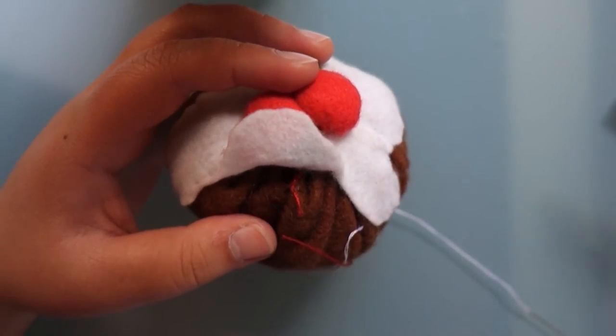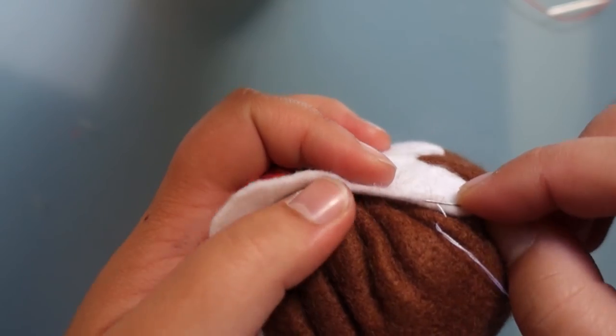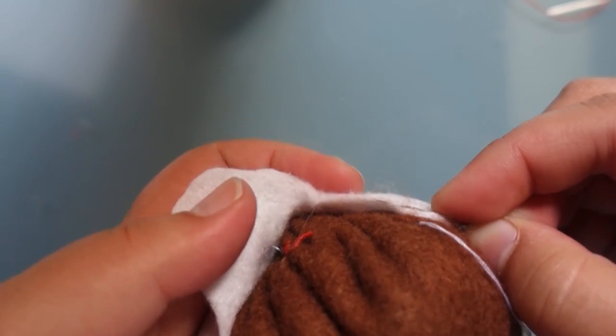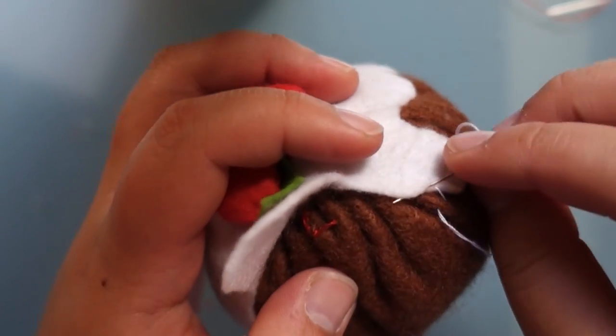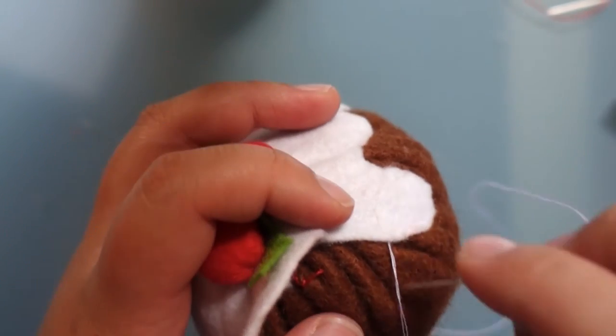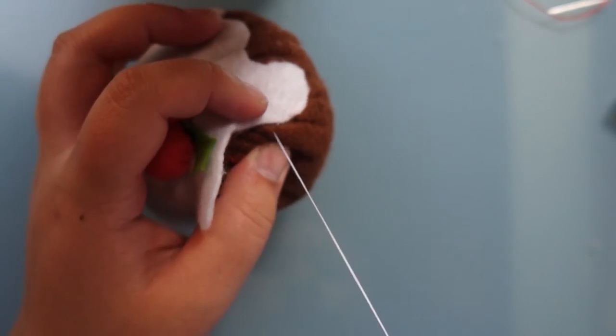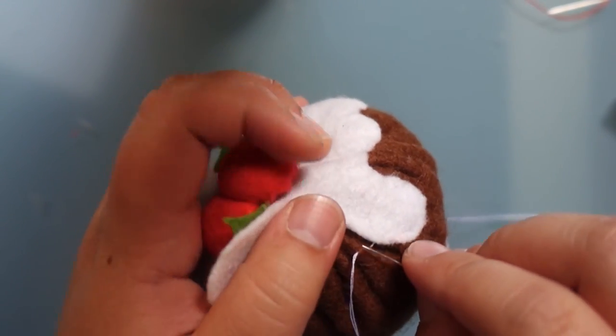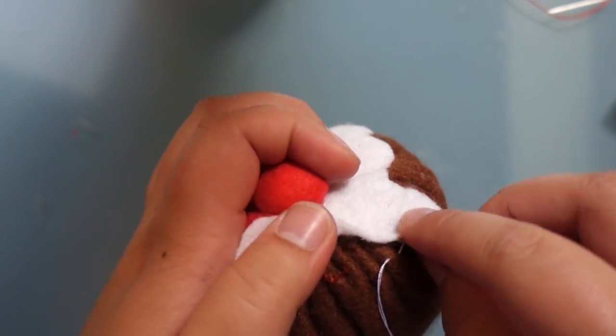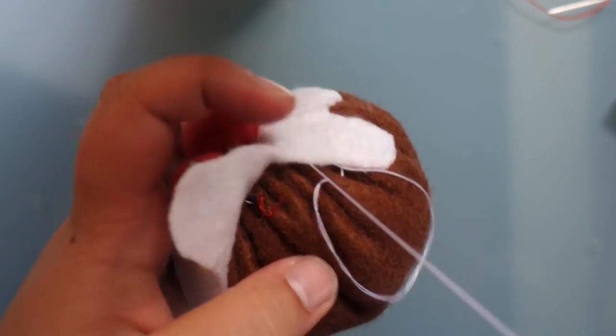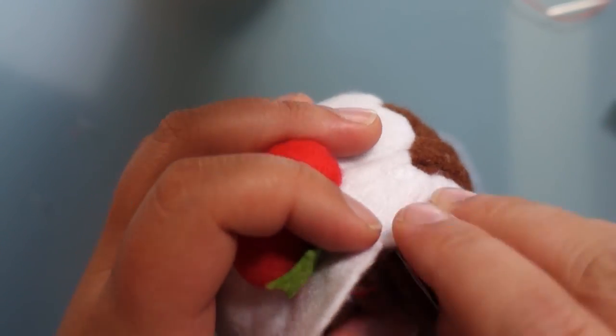Then all you've got to do is cut off your excess thread and now it's time to patch up our icing. We do this simply by continuing our hidden ladder stitch as before, taking a little bit of brown felt and taking a little bit of white felt. And we want to make this as neat as possible so we don't see any of our thread stitching.